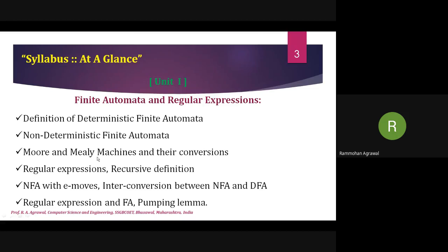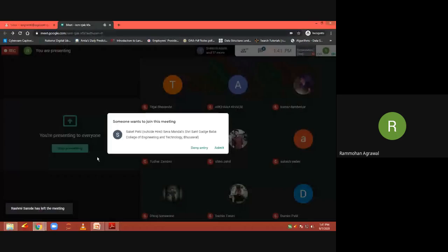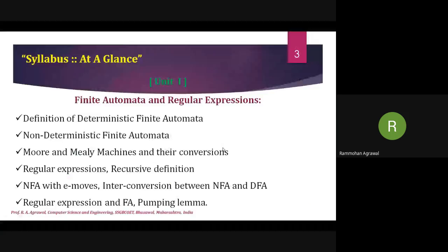Next are Moore and Mealy machines. Suppose after performing some task, a machine should produce some output. When we require a machine to take an input and produce an output, there are two types of models available: the Moore model and the Mealy model. These two models are types where the system takes an input from the user and responds with an output.